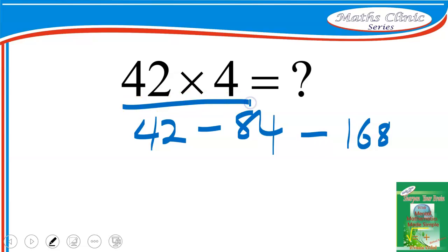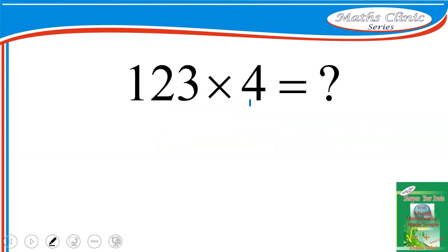42 times 4 is 168. It's so simple - you double and double again. Let's take another example: 123 times 4. I'll double 123 and that will give me 246. I double 246, then I have 492, and that becomes the answer. You can do this mentally - try and exercise your brain.